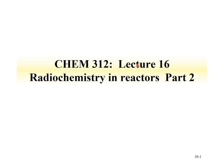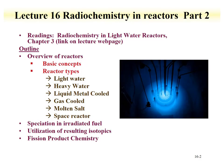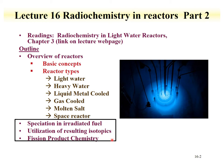Welcome to Lecture 16 for Chemistry 312. This lecture is on nuclear reactors and radiochemistry in reactors, and it's in two parts. This second part is going to focus on radiochemistry in reactor systems. In Part 1, we described some basic concepts of nuclear reactors and went over different types of reactors. In Part 2, we're going to talk about the speciation of isotopes within irradiated fuel, how information on isotopes can be used to describe reactor behavior, and then an overview of fission product chemistry.